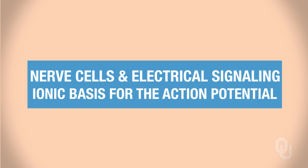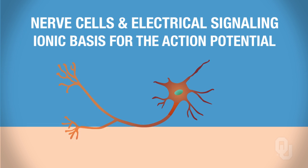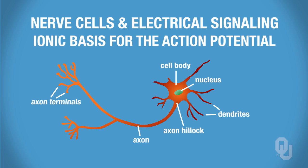In this segment of the Neural Integration Lecture Series, you will learn about the ionic basis of an action potential. The goal is to view how a neuron generates an electrical signal and how that signal can be propagated down the neuron.